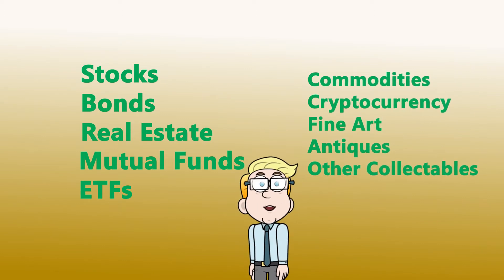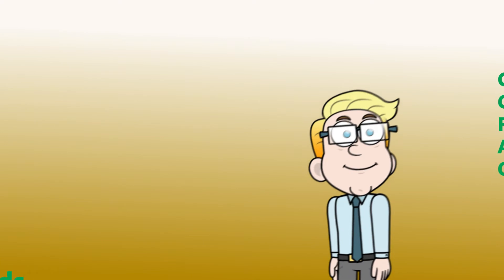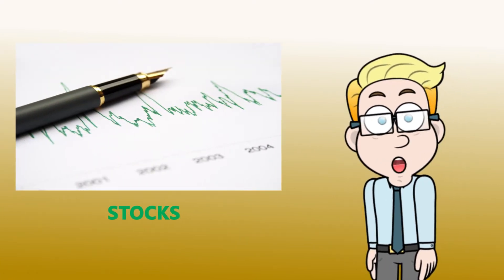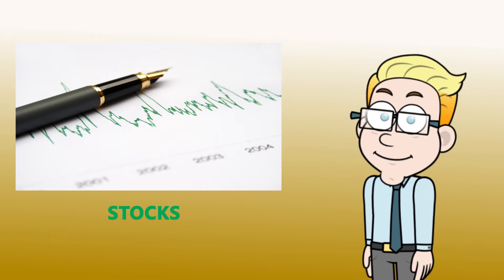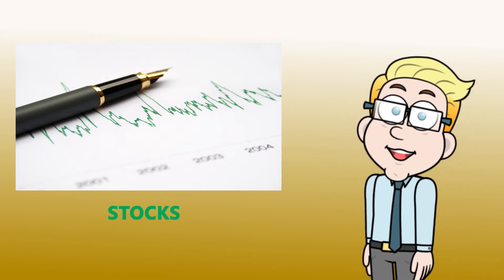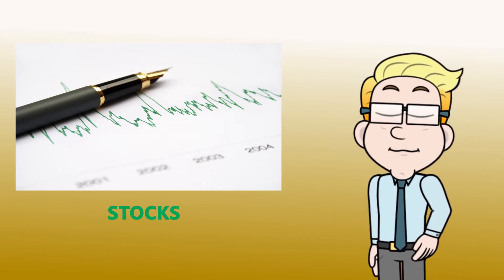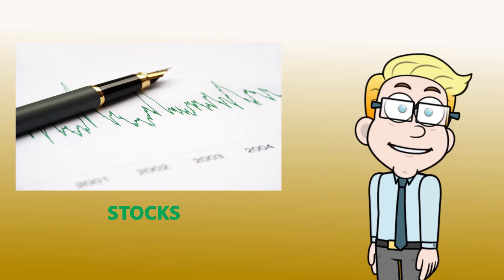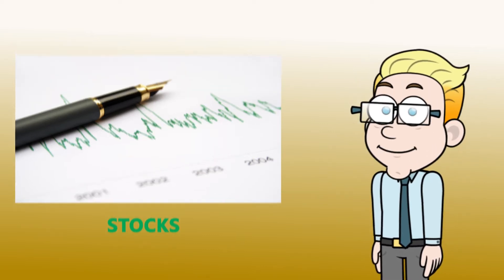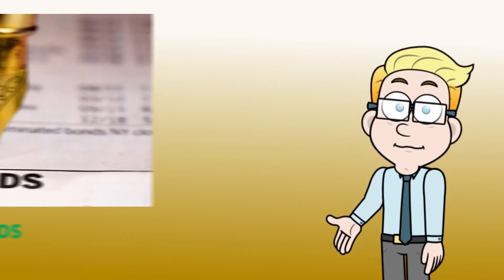Let's look more closely at the main types of investments. First, let's look at stocks. You can buy shares of stock to get partial ownership in a company. You can share in the company's potential gains or losses as an owner or shareholder. Stocks may also pay dividends, which are regular payments. Stocks can be risky as there are no guarantees of returns and companies could even go out of business.